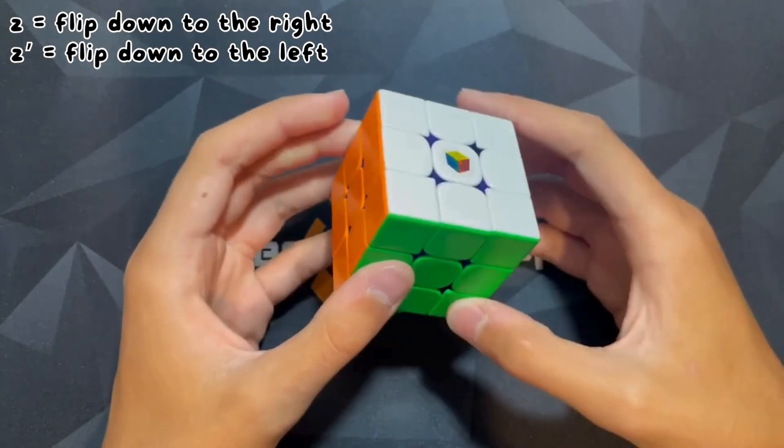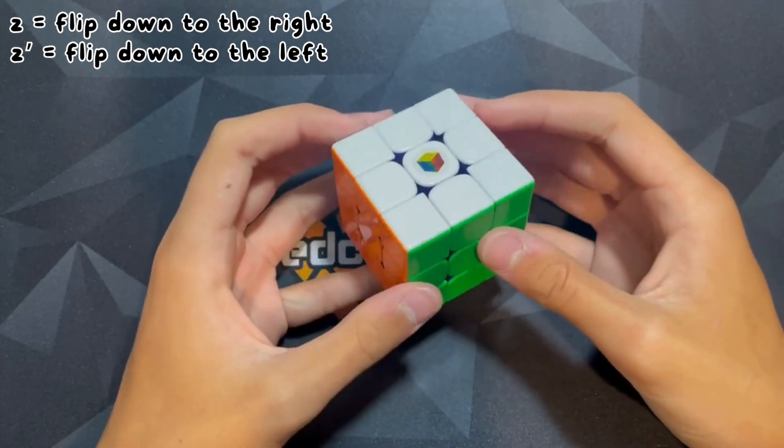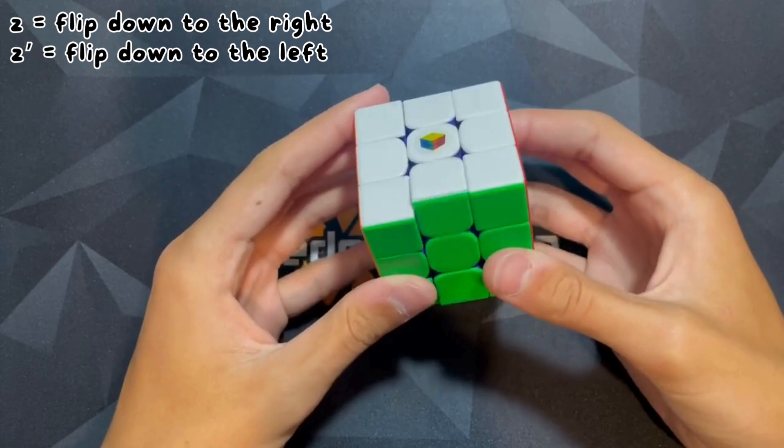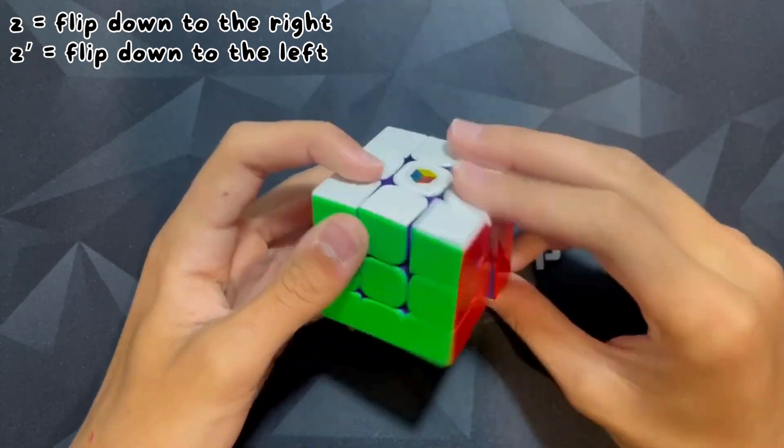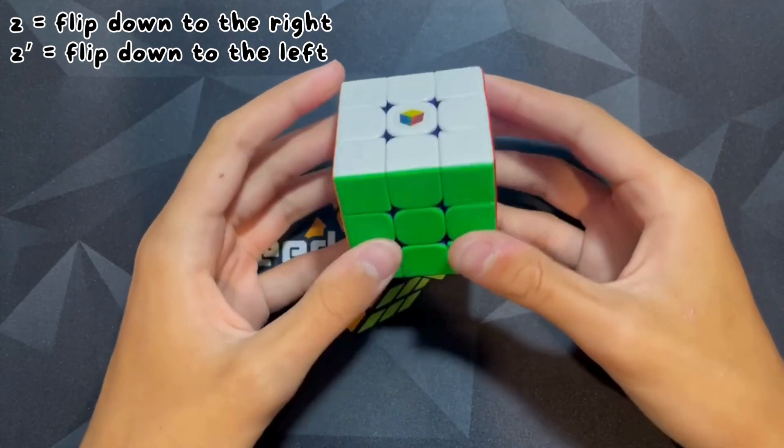So for these rotations, this is where you're moving the entire cube. It's a cube rotation. For the moves, that's where you're turning like a layer. So that's it for the rotations. Now for the moves, we're gonna do M, S, and E.